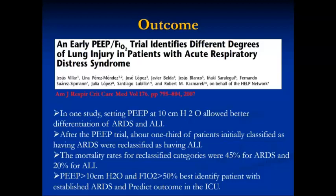A study by Wheeler looked at combinations of PEEP and FiO2 to differentiate lung injury severity. They had four categories: 100% FiO2 with PEEP 10, 100% FiO2 with PEEP 5, 50% FiO2 with PEEP 5, and 50% FiO2 with PEEP 10. Regression analysis showed that PEEP 10 combined with FiO2 50% best identifies subcategories of ARDS. As a treating physician, place patients on PEEP 10 and FiO2 50%, obtain a PF ratio, and determine exactly where the patient falls.